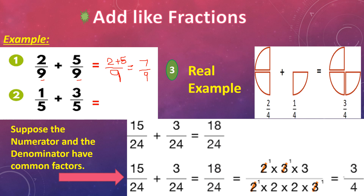Second example: 1 by 5 plus 3 by 5. Same denominator, so we write the denominator 5, and only add the numerators: 1 plus 3 equals 4. So the answer is 4 by 5.